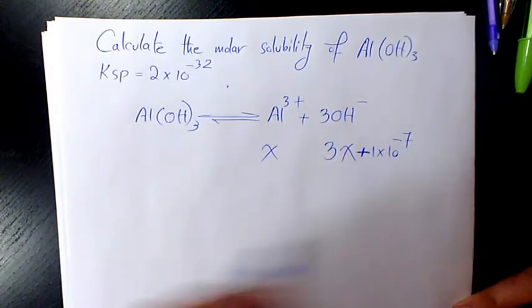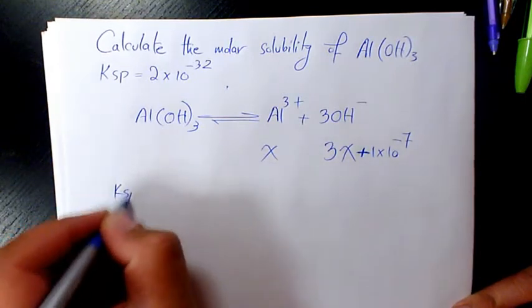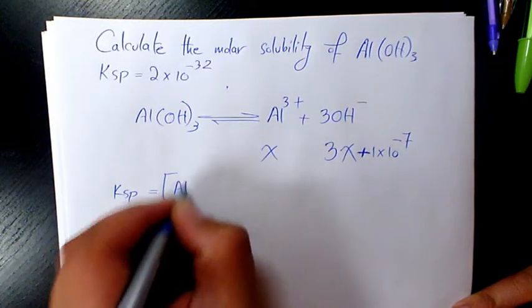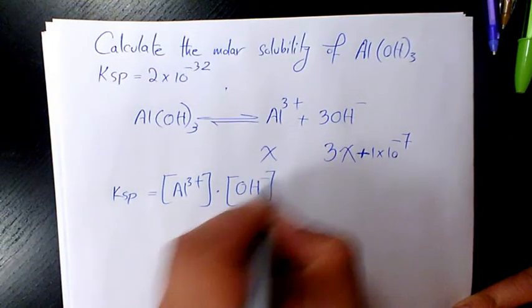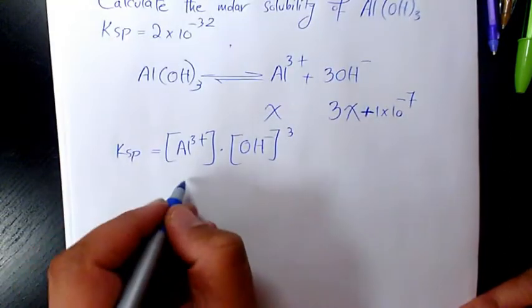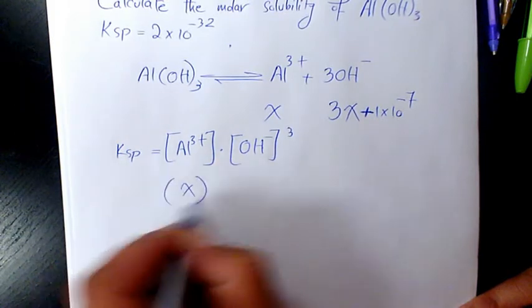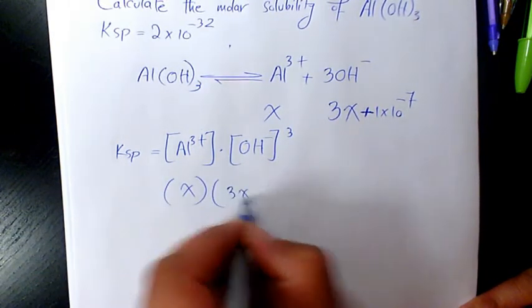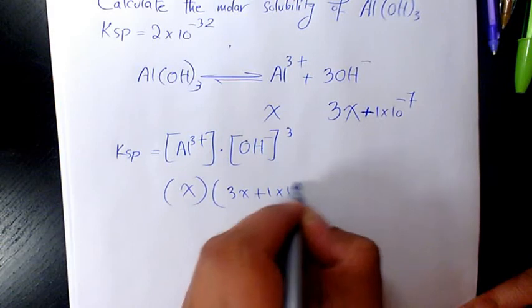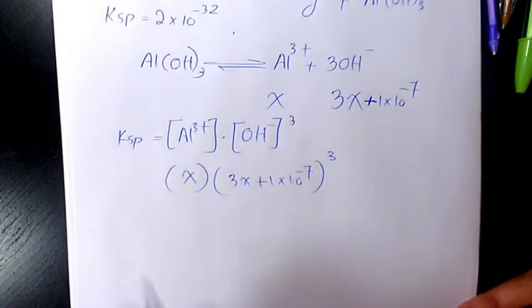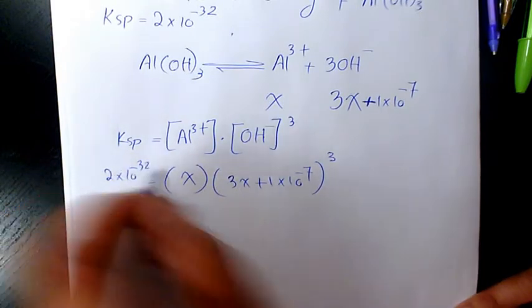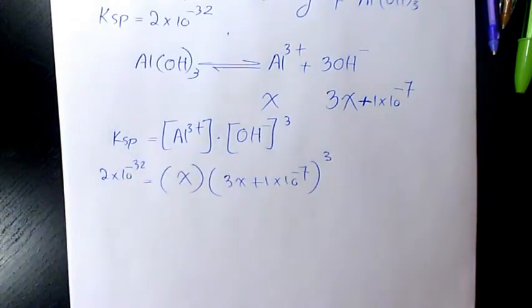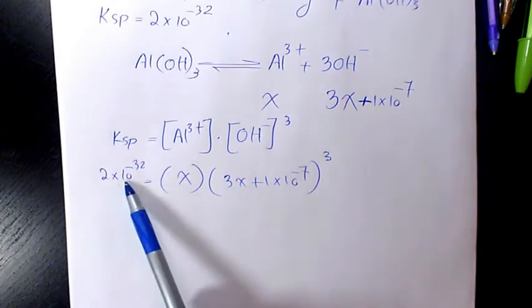So KSP will be aluminum ion times OH to the power of 3. That's X and OH is 3x plus 1 times 10 to the power of negative 7 to the power of 3. And KSP is 2 times 10 to the power of negative 32. Now since the KSP is a very very small number,